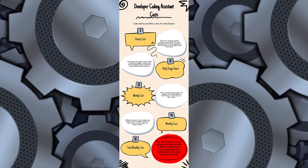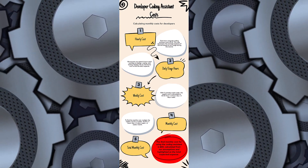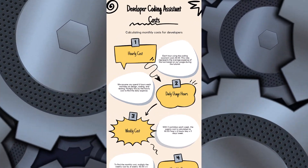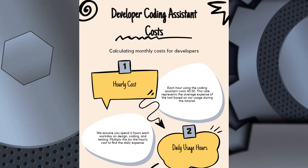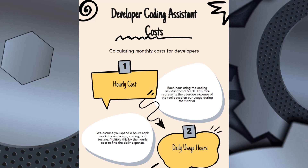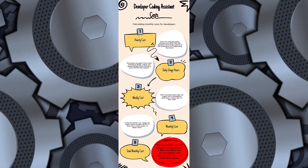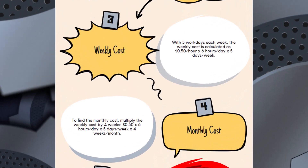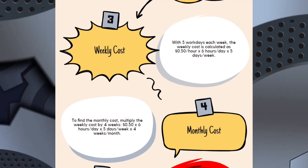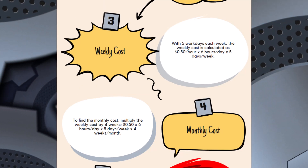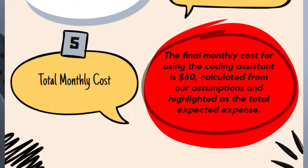Let's take the data from our tutorial about our costs, plus the assumptions we made about usage, to get a rough idea of what costs might look like for a month. Our hourly cost was about $0.50 per hour for using Claude 3.5 Sonnet, and we assume six hours of Claude usage each day. Taking $0.50 per hour times six hours per day times five days per week, we arrive at a total monthly cost of about $60 per month. I caution that these are very rough estimates based on some assumptions, and this will differ for you, but hopefully it gives you an idea.